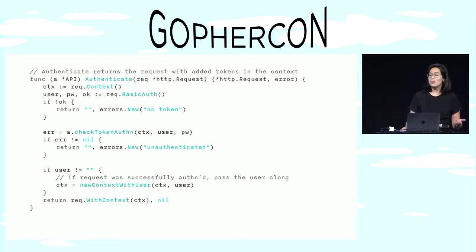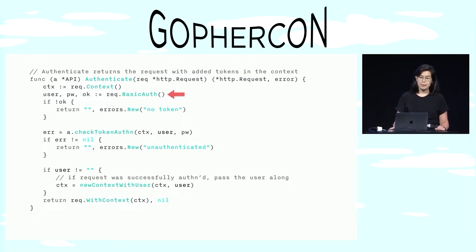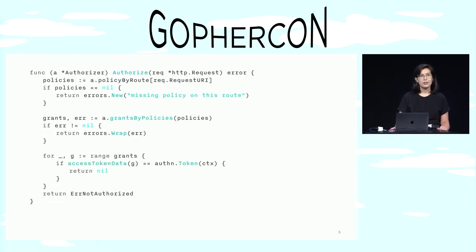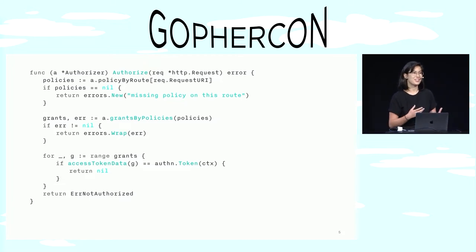So this is what we were doing at Chain in April 2017. When a request came in, we'd pluck a username and a password from the basic auth fields of the request, and then we'd check that they were valid together. And if the request passed this step, we'd stick the user in the context. Then we'd move on to an authorization check where we'd make sure that the user was actually allowed to make this request.